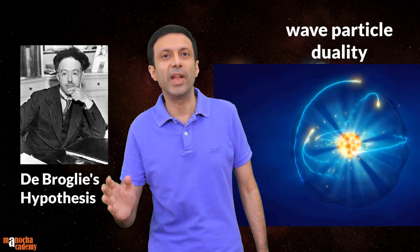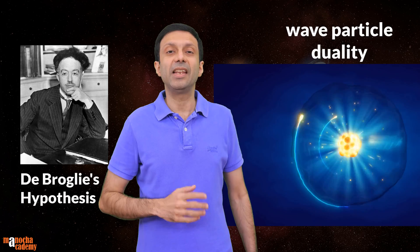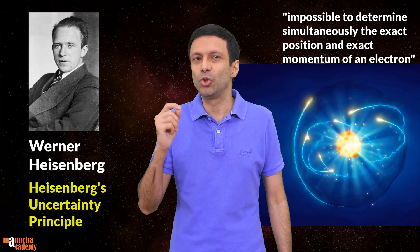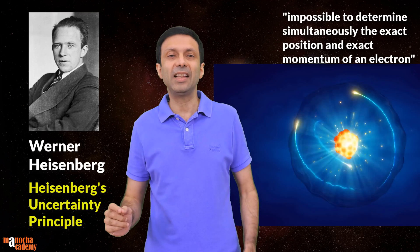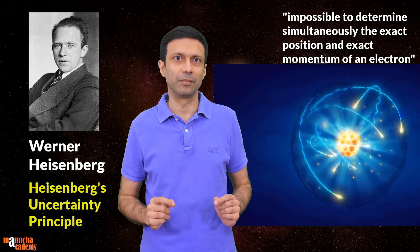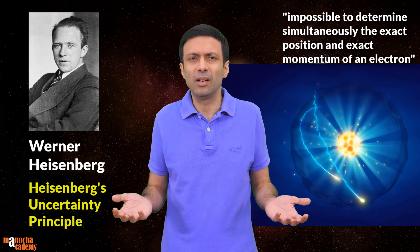In the previous video we saw that de Broglie's hypothesis about electrons was correct — electrons have a dual behavior, they can behave both as a particle and as a wave, and this is called wave-particle duality. In 1927, Werner Heisenberg, a German physicist, stated a principle famously known as Heisenberg's uncertainty principle. He said that it is impossible to determine simultaneously the exact position and the exact momentum of an electron.